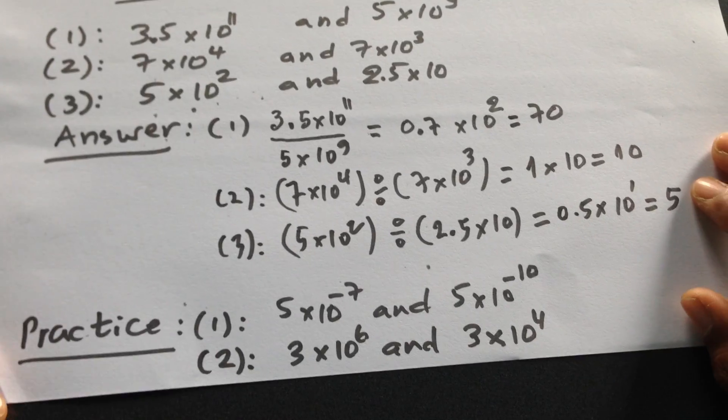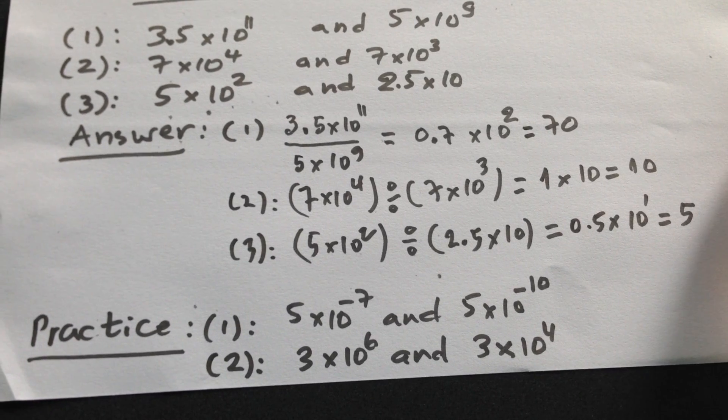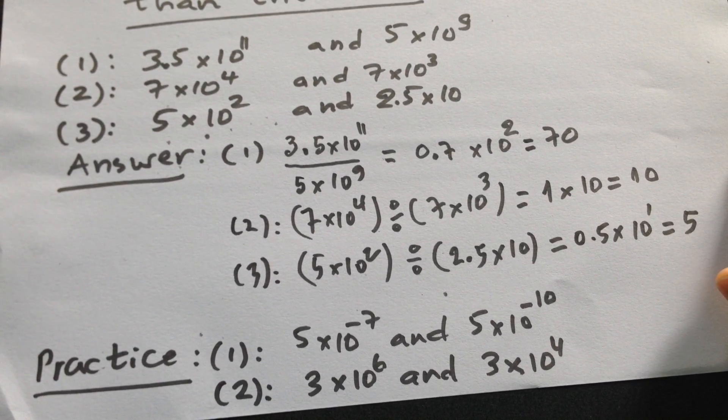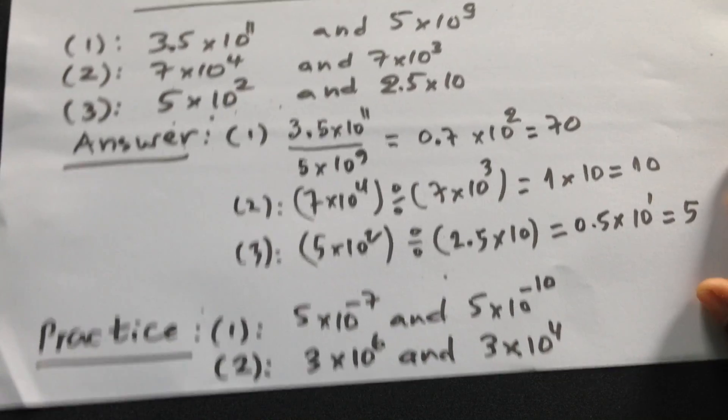So in here you need to do the practice. The practice here is 5 times 10 to the power negative 7 and 5 times 10 to the power negative 10. And number 2: